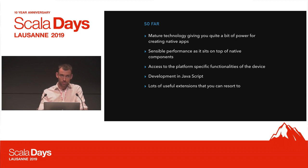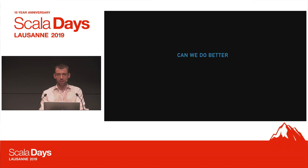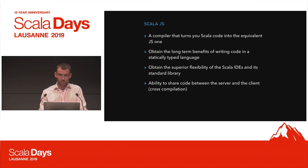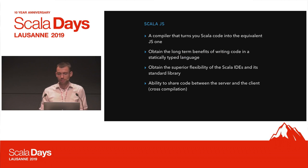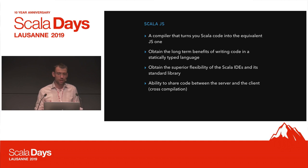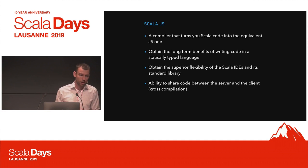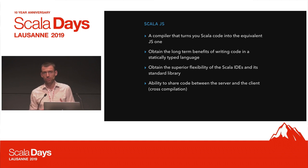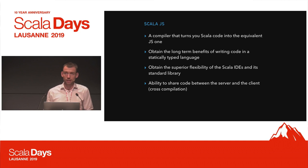Going further, we might ask ourselves whether we can do better. In order to answer that, Scala.js deserves a look. It's a compiler that turns your Scala code into equivalent JavaScript. The great thing about it is that you obtain the long-term benefits of writing code in a statically typed language, and you can use the Scala ecosystem, the IDE, and the compiler.